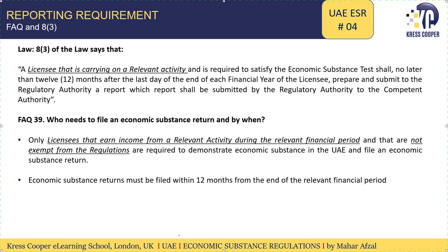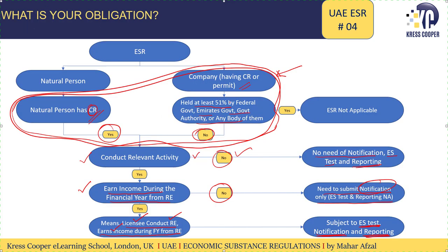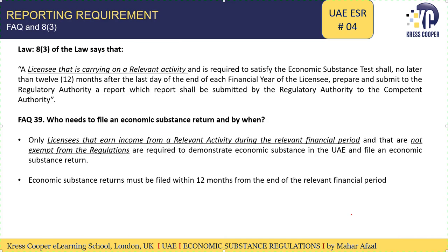For the reporting requirement, every licensee — except companies held at least 51% by the government or government authority — that is conducting a relevant activity and earning any income from that relevant activity is subject to the reporting requirement. This is mentioned in Article 3 of the Cabinet Decision.